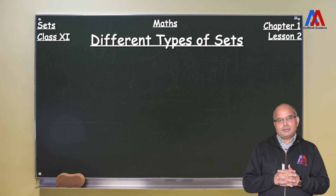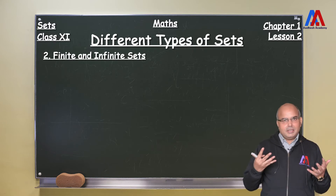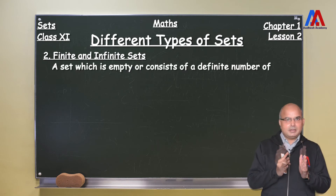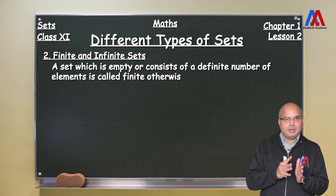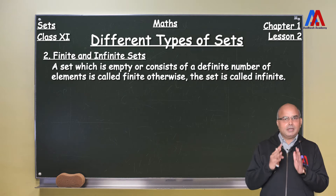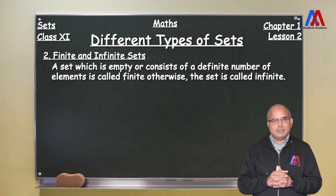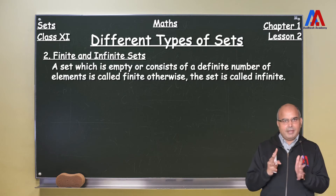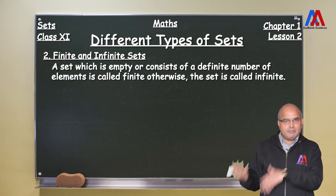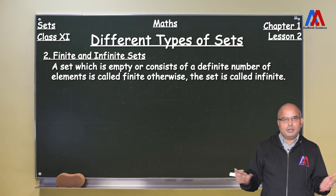Let's take the second category of sets which is called finite and infinite set. As it is evident from the name itself, a finite set means that the number of members are fixed. That means we can define that there are 100 members, 1000 members, 100,000 members or whatever the number is — it can be defined. Anything which is not a finite set becomes an infinite set, because the number of members are infinite and cannot be counted.